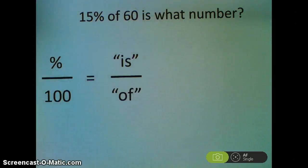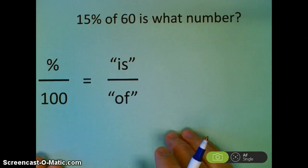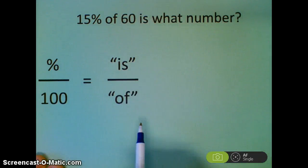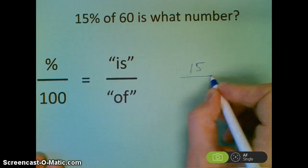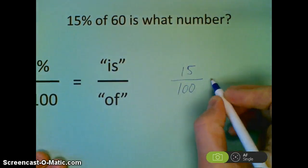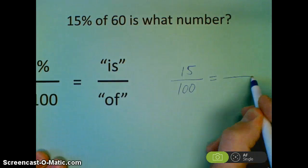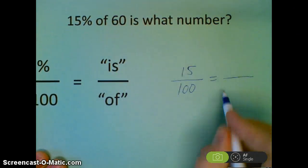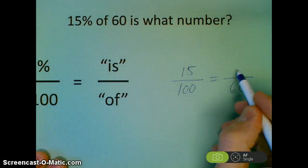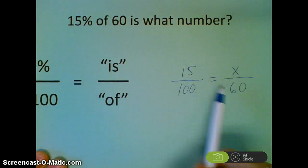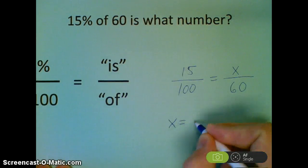Next problem: 15% of 60 is what number? Write down the problem, try it, and I will go over the solution. I'm given the 15%. The 100 always stays the same. There's my equal sign. Of 60, I know that of goes on the bottom. And is what number? There's my variable. Is goes on the top. So 60 times 15 divided by 100. I'm left with x equals 9.